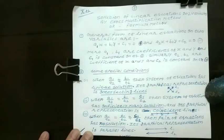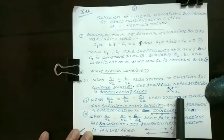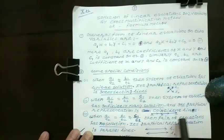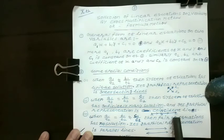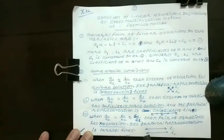So now, remember that for unique solution, a1 upon a2 is not equal to b1 upon b2. For infinitely many solutions, a1 upon a2 equals b1 upon b2 equals c1 upon c2. And for no solution, a1 upon a2 equals b1 upon b2 is not equal to c1 upon c2. In the first condition, graphical representation is intersecting lines. In second, coincident lines. In third, parallel lines.